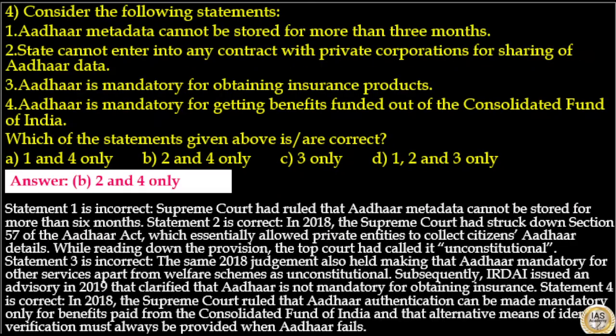The answer to this question is option B — statements 2 and 4 are correct. Statement 1 is incorrect: the Supreme Court ruled that Aadhaar metadata cannot be stored for more than 6 months. Statement 2 is correct: in 2018, the Supreme Court struck down Section 57 of the Aadhaar Act, which allowed private entities to collect citizens' Aadhaar details, calling it unconstitutional. Statement 3 is incorrect: the same 2018 judgment held making Aadhaar mandatory for services apart from welfare schemes as unconstitutional; IRDAI issued an advisory in 2019 clarifying that Aadhaar is not mandatory for obtaining insurance. Statement 4 is correct: the Supreme Court ruled that Aadhaar authentication can be made mandatory only for benefits paid from the Consolidated Fund of India, and an alternative means of identity verification must always be provided when Aadhaar fails. The answer is option B.